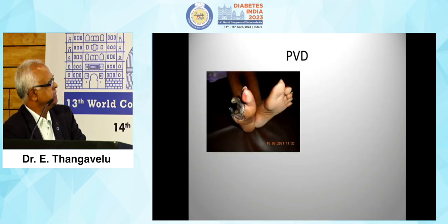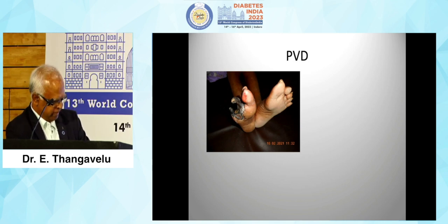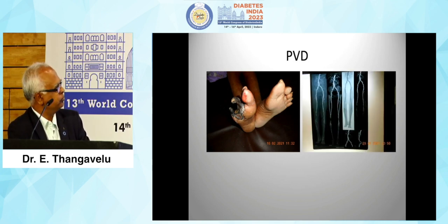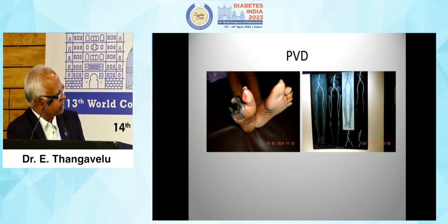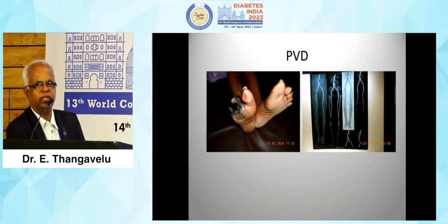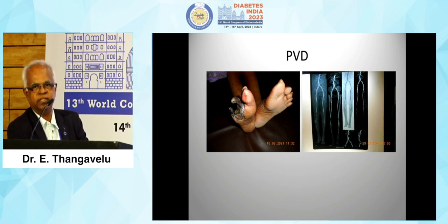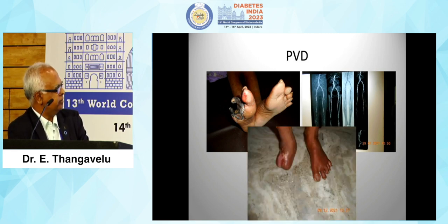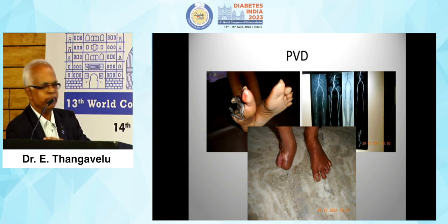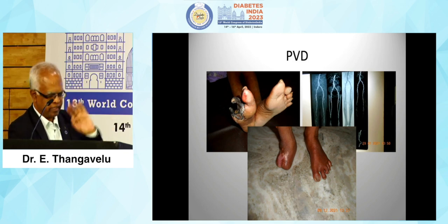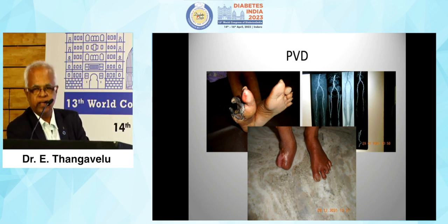A case of severe peripheral vascular disease: CT peripheral angiography showed thrombus occlusion of 3.5 cm in the popliteal artery. No medical management was possible — only surgical intervention. After surgical intervention, trans-metatarsal amputation was done.